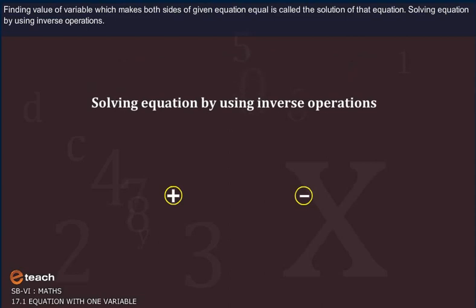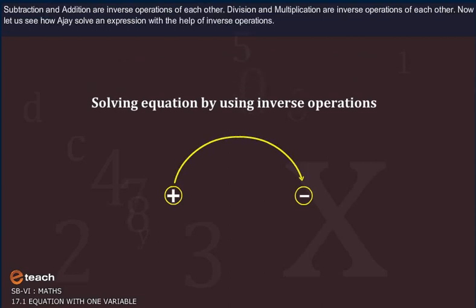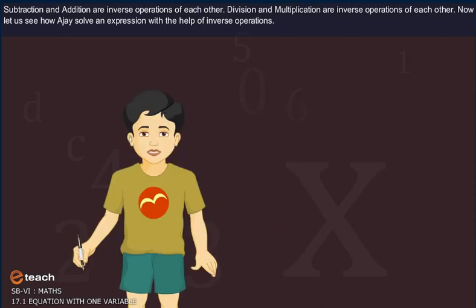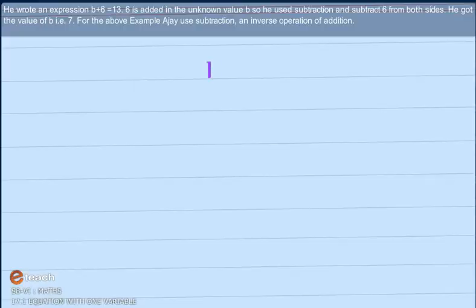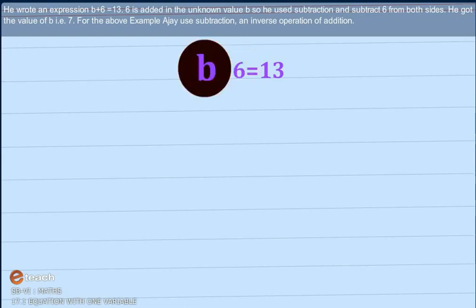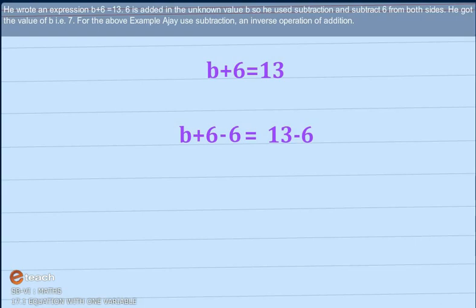Solving equation by using inverse operations: Subtraction and addition are inverse operations of each other. And division and multiplications are inverse operations of each other. Now let us see how Ajay solves an expression with the help of inverse operations. He wrote an expression B plus 6 is equal to 13. 6 is added in the unknown value B. So he used subtraction and subtract 6 from both sides. He got the value of B that is 7. For the above example, Ajay used subtraction, an inverse operation of addition.